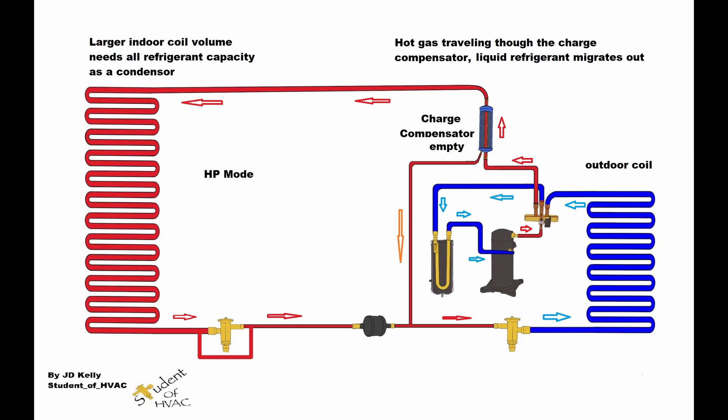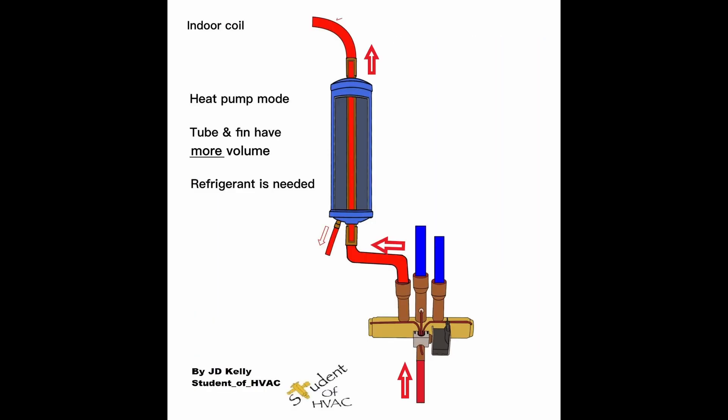So this manufacturer has moved the charge compensator between the indoor coil and the reversing valve. If we notice, the indoor coil is larger in volume, so it's drawn larger. It needs all the refrigerant during the heat pump or heating mode. As the hot gas flows through the center tube of the charge compensator, the charge compensator gets very warm. Liquid refrigerant migrates out of the charge compensator and into the system.